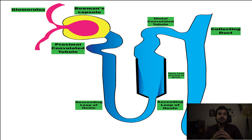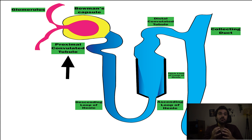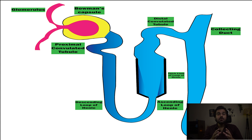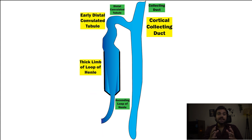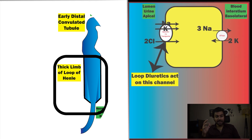We start off by looking at the basic labeled diagram of a nephron that includes Bowman's capsule, glomerulus, proximal convoluted tubule, loop of Henle, distal convoluted tubule, and cortical collecting duct. In these syndromes, we are considering only the portion that starts from the thick ascending limb of Henle to the cortical collecting duct.